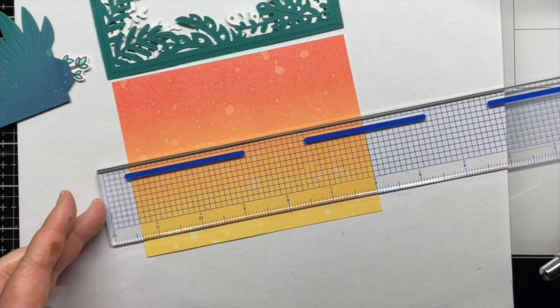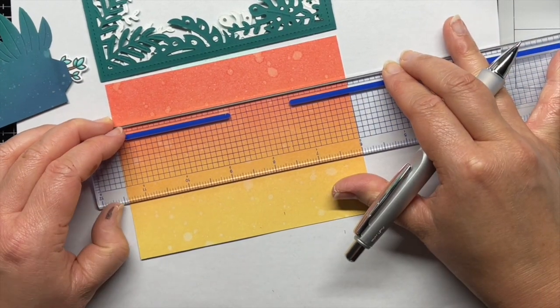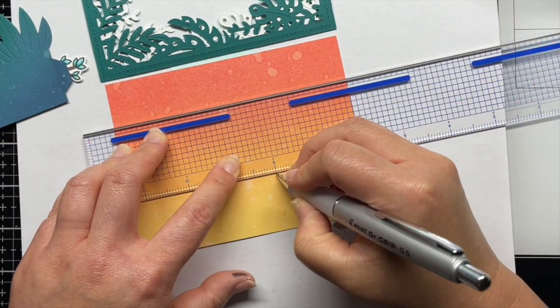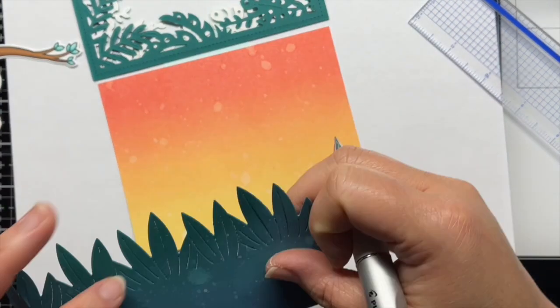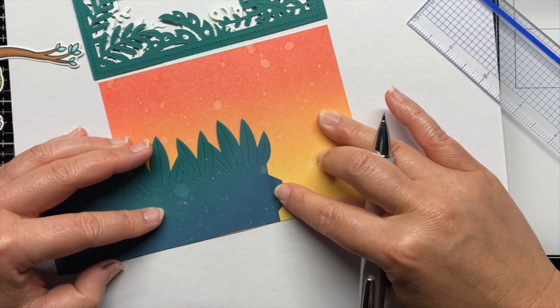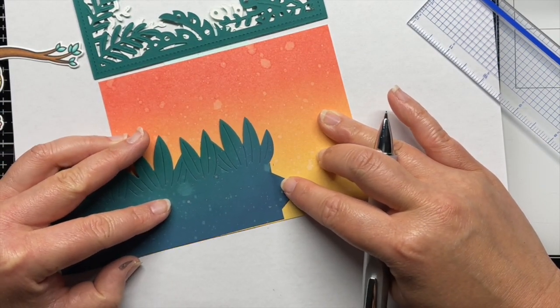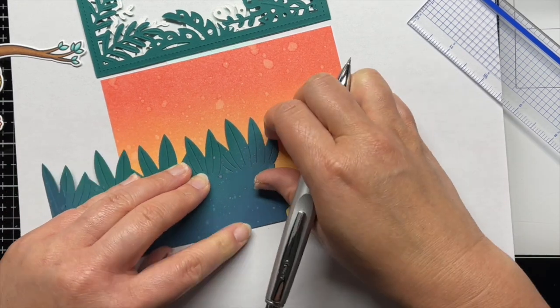Next I take a ruler and mark 2 inches from the right side of the panel with a pencil. Then I line up the rainforest cardstock border along the bottom of the panel and the lines I just drew and mark the edges of the tab.